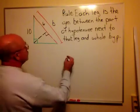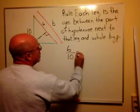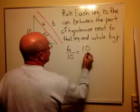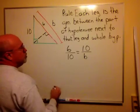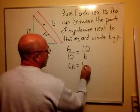Well, by definition of geometric mean, that gives us 6 over 10 equals 10 over B. We cross-multiply. 6 times B equals 10 times 10, which is 100.